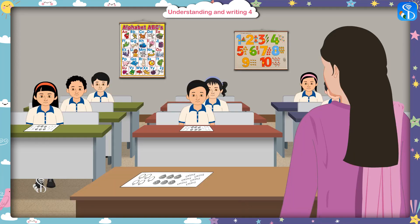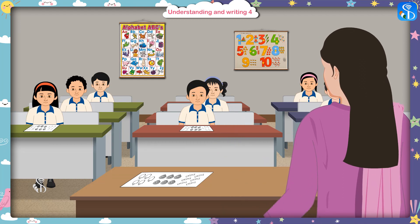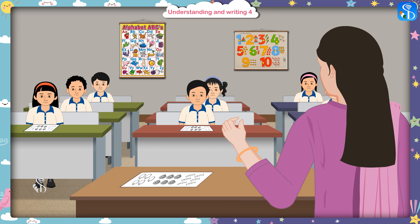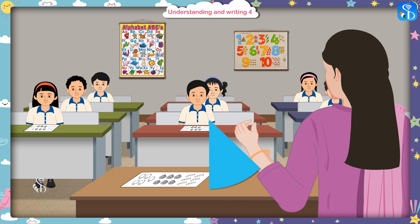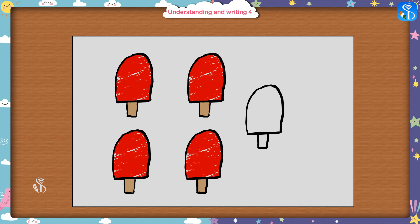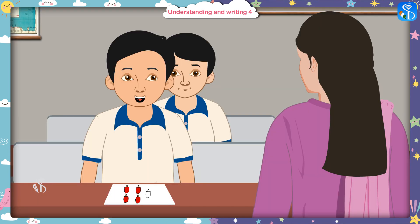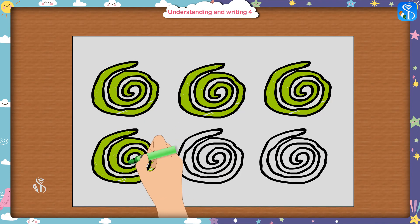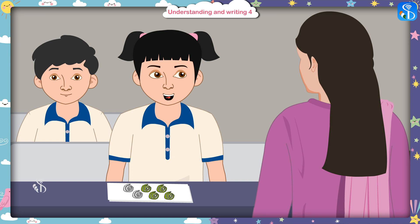Some objects are given in the following pictures. You have to color four objects out of them. Come on, let us color the objects. I have colored these four ice creams. Good! And I have colored four circles. Well done!